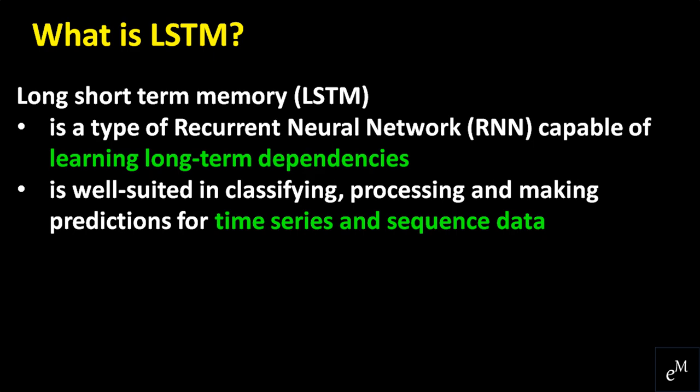LSTM is very different from other deep learning techniques such as multilayer perceptrons and convolutional neural networks, in that they are designed specifically for sequence prediction problems. LSTM is a unique type of RNN — recurrent neural network — that is capable of learning long-term dependencies, which is very useful for certain types of predictions that require the network to retain information over very long time periods. LSTM networks are very suitable for classifying, processing, and making predictions based on time series and sequence data.